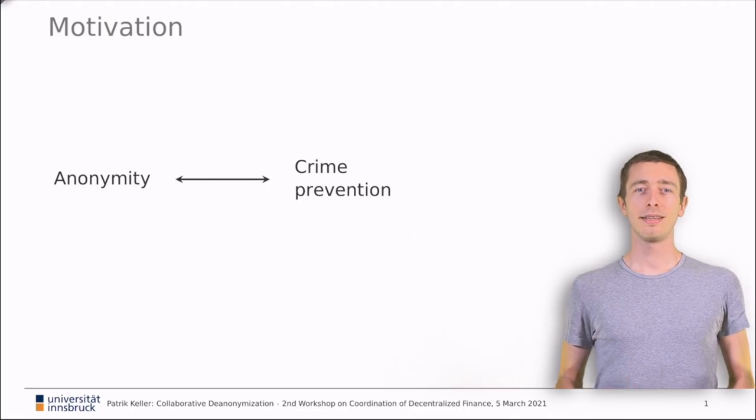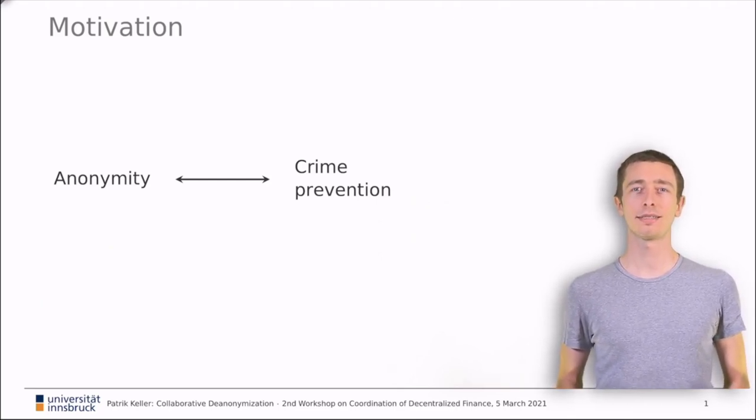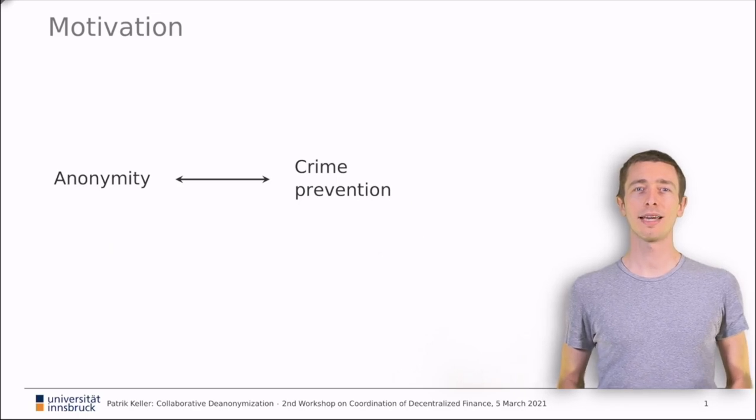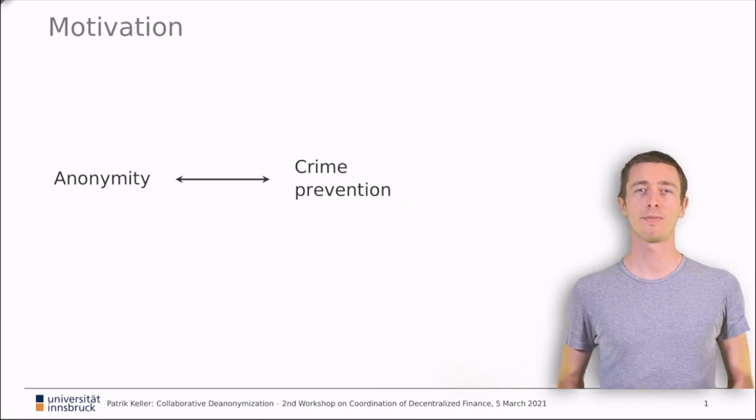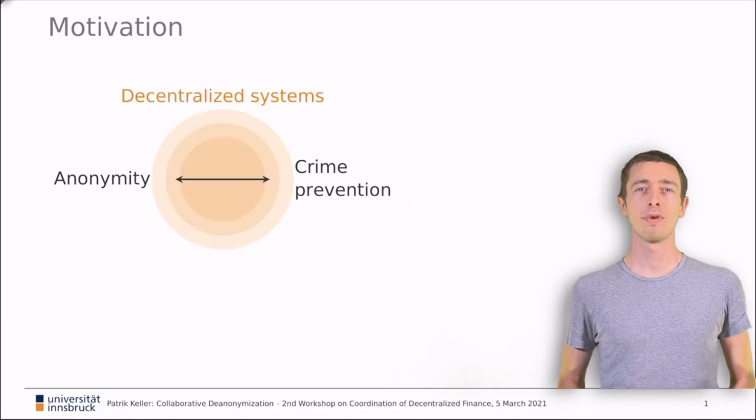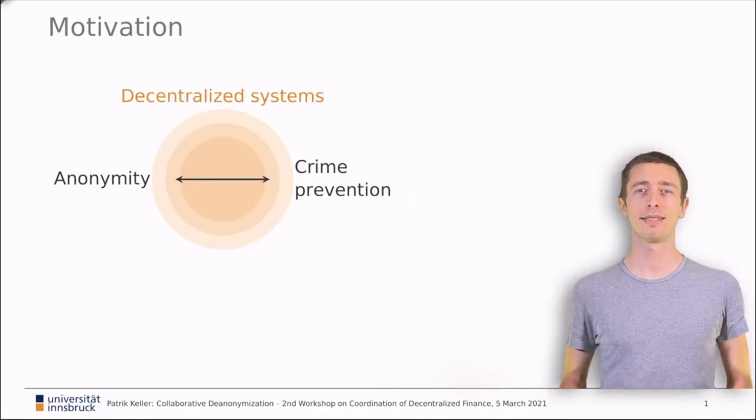Our idea addresses the conflict between anonymity and effective crime prevention. On the one hand, anonymity is necessary to protect citizens from the state, but on the other hand, with too much anonymity, the state cannot protect its citizens from each other. So obviously there is a trade-off here. We want to look at this conflict from the challenging perspective of decentralized systems.